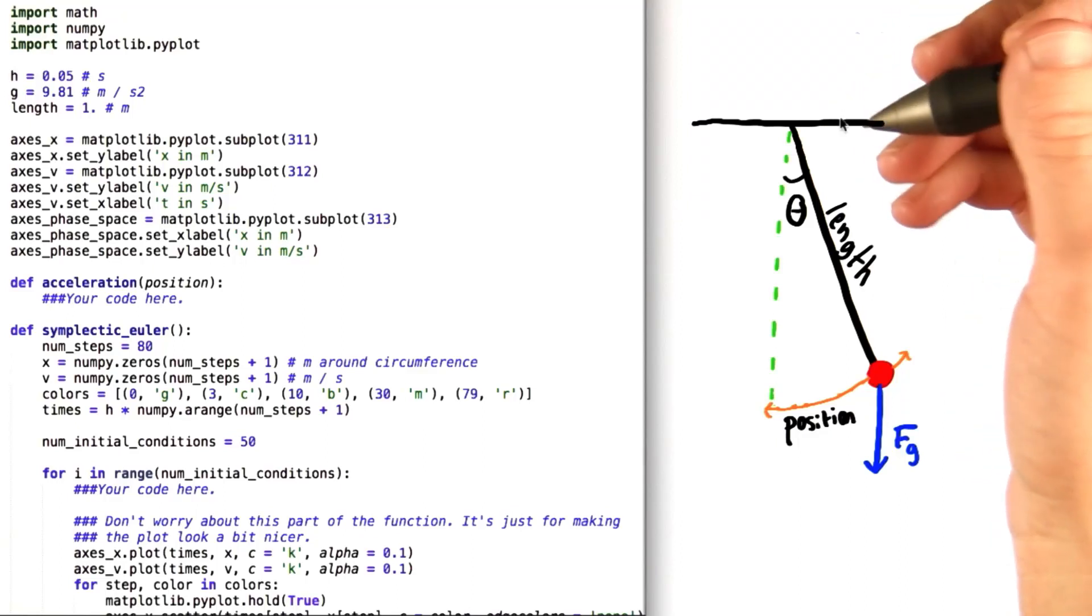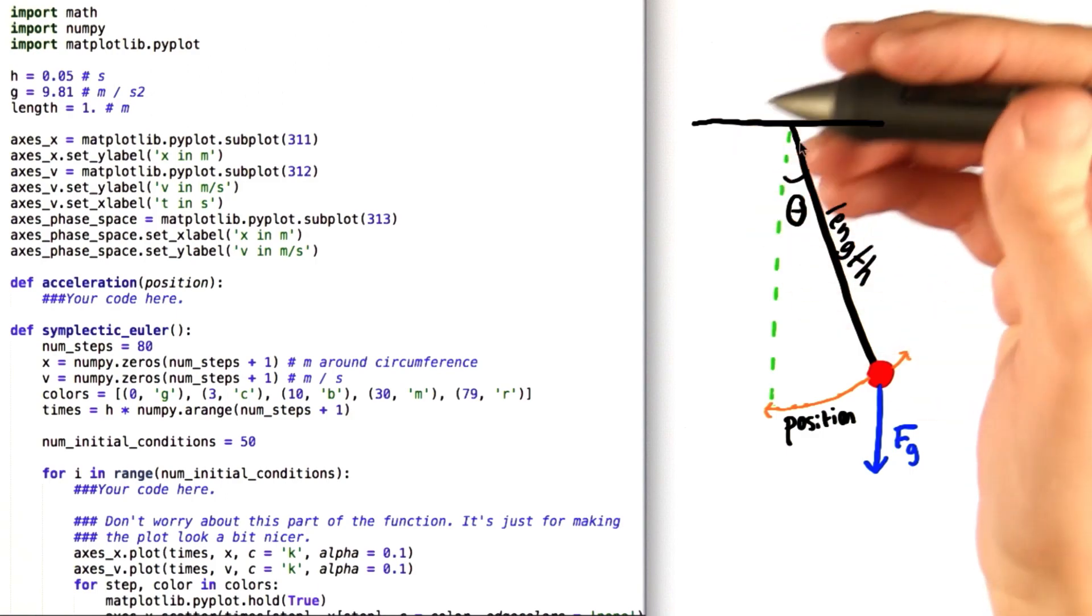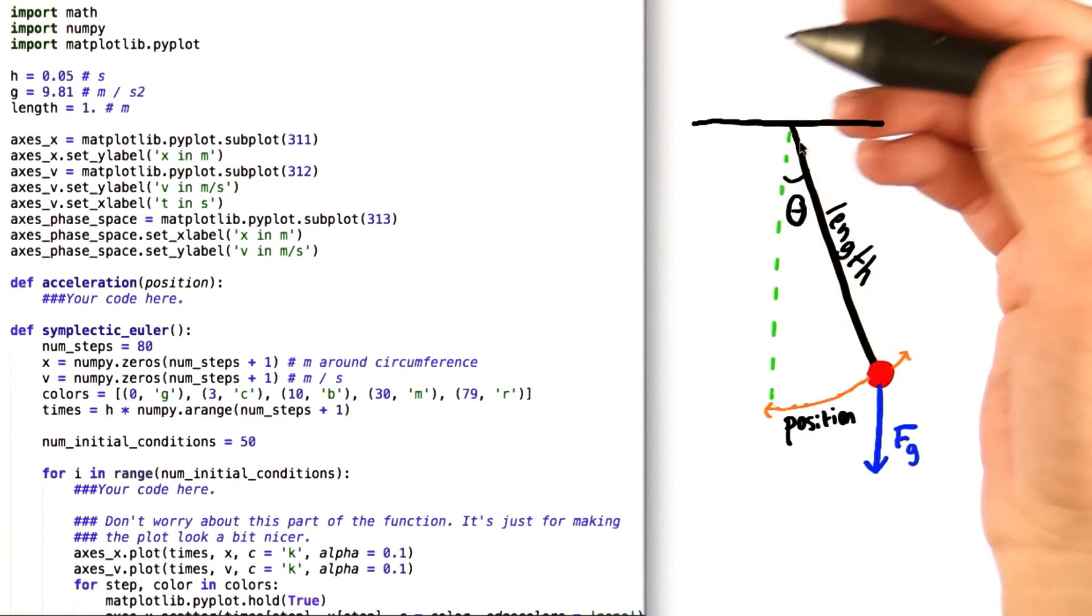So now we come to the first problem of unit 2. This time, instead of dealing with orbits, we have a pendulum. And we want to create expressions for its position, velocity, and acceleration.